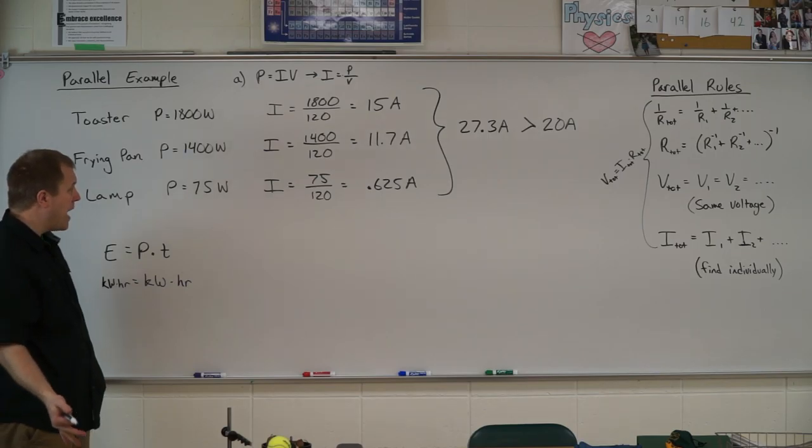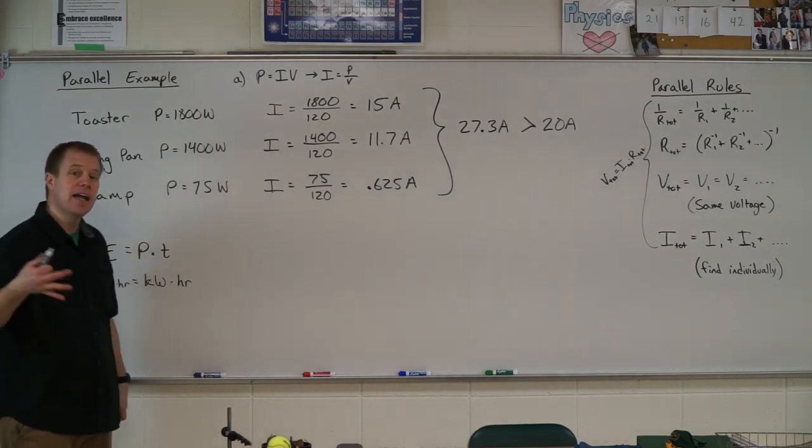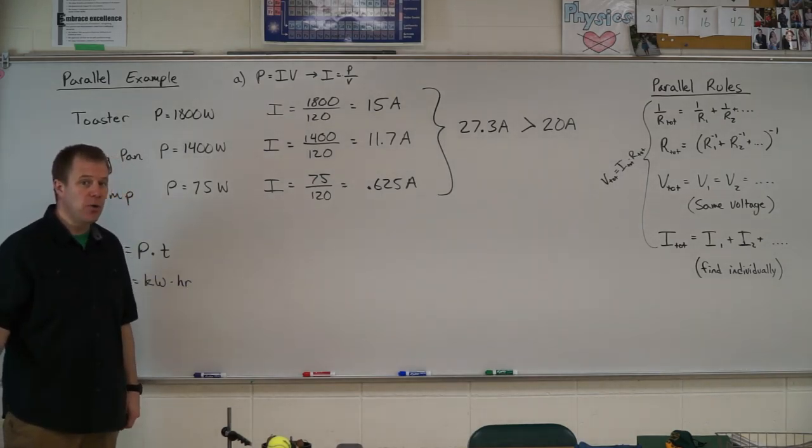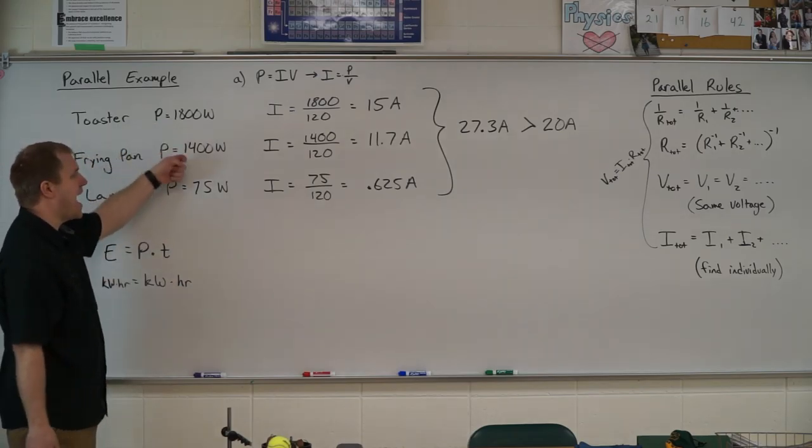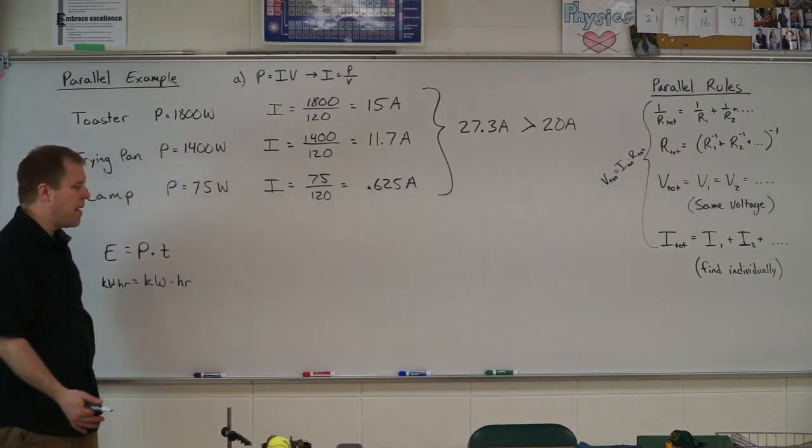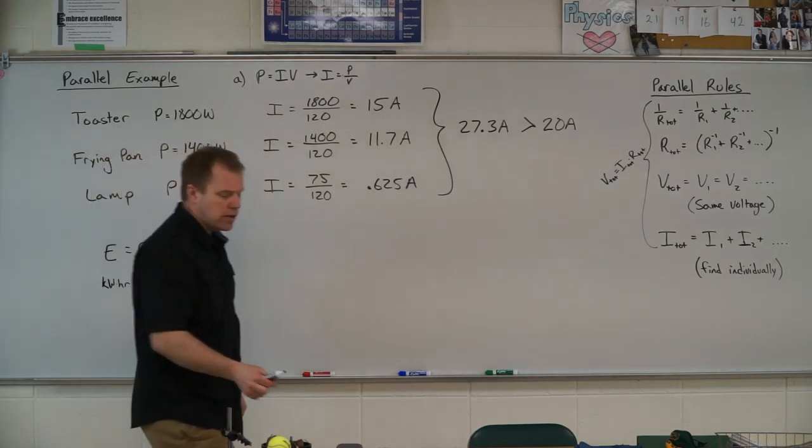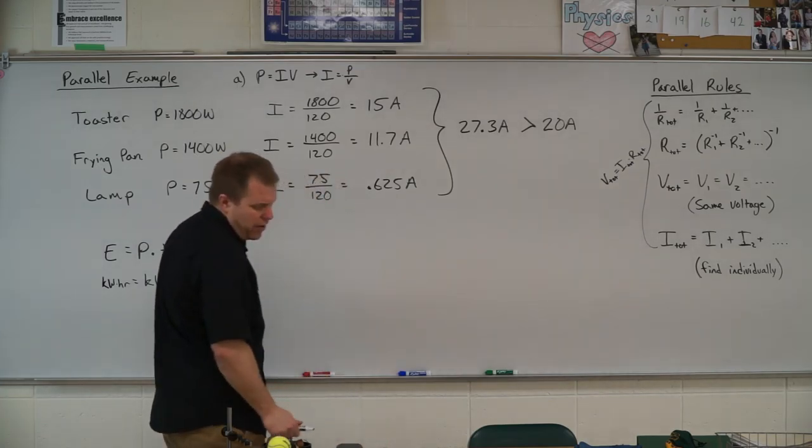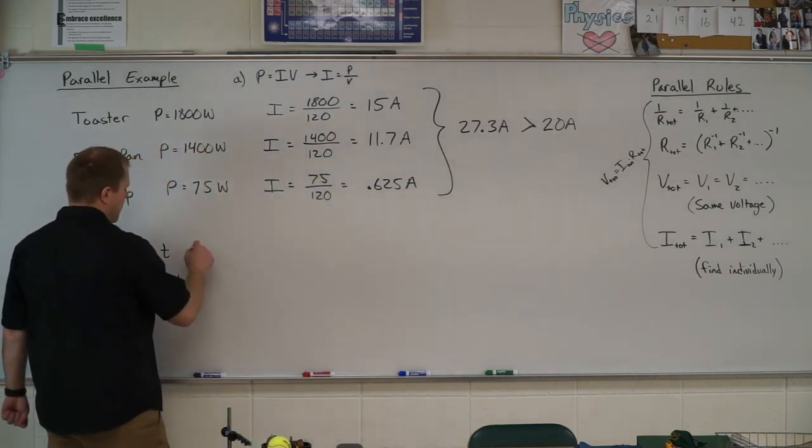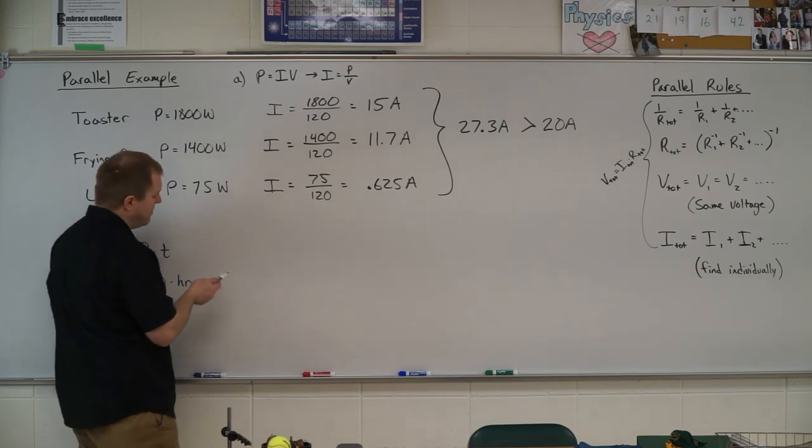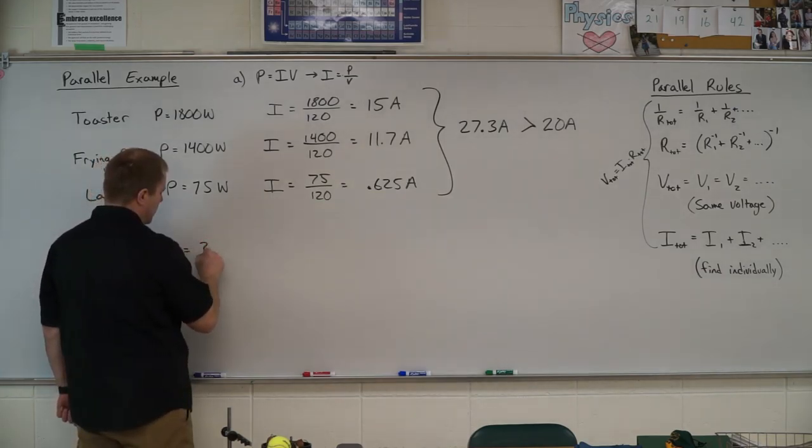My total power is going to be my total current times total voltage, or I could just add up the individual powers. Either way works. You should be able to add those up. You get 3,275 watts, but we want it in kilowatts, so 3.275 kilowatts